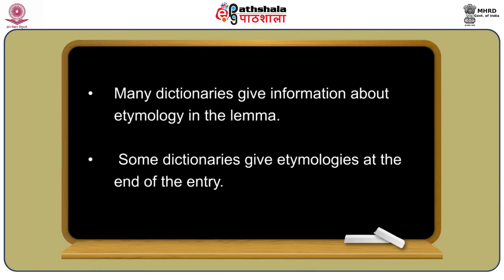Many dictionaries give etymological information in the lemma form; some give etymologies at the end of the entry. Dictionaries of Indian languages such as Hindi, Bangla, and Marathi provide this information with origin tags indicating the source language and the source form. For example, in Hindi, 'chota' is derived from Sanskrit 'khudra' meaning small, given immediately after the word. The lemma also contains variants of the headword; when variants occur at their alphabetical place, a cross-reference is usually made to the main entry.